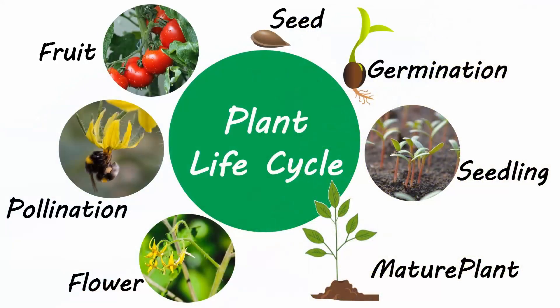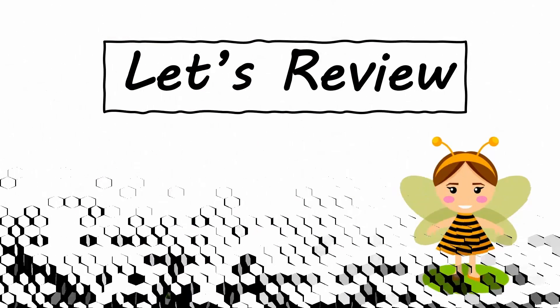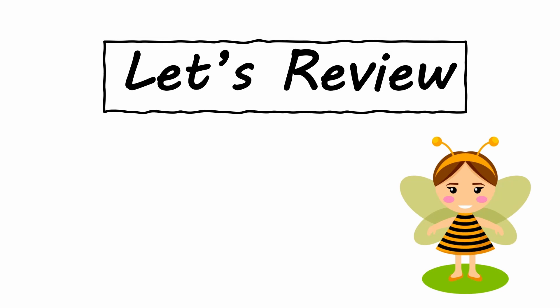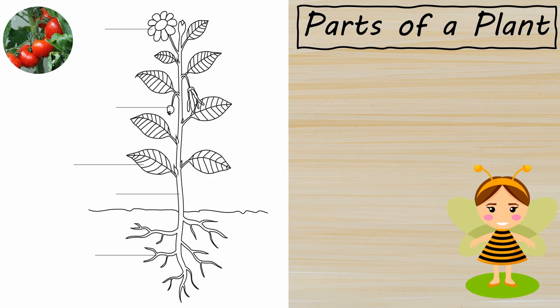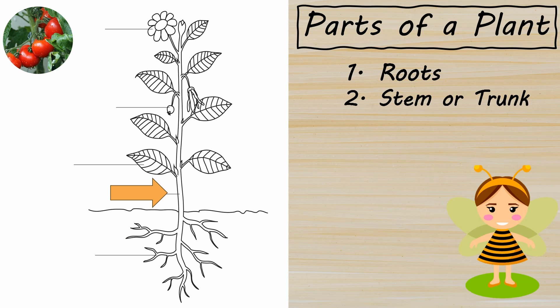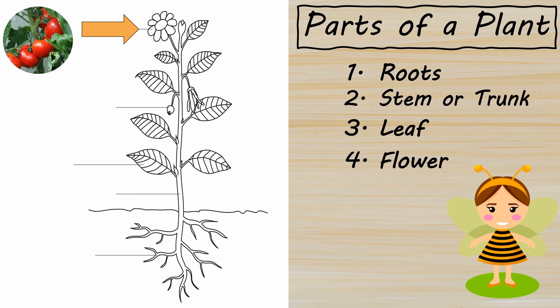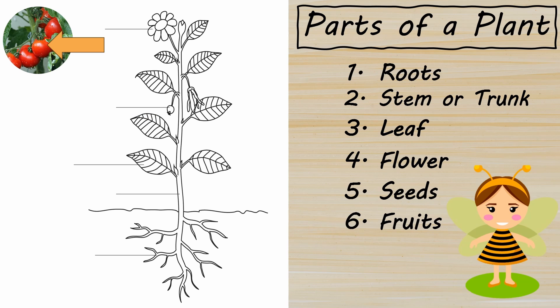The next time you see a flower or eat a piece of fruit, remember the incredible journey it took to get there. We're at the end of the lesson. Let's do a quick review before we test your knowledge. There are six main parts of a plant: roots, stem or trunk, leaf, flower, seeds, and fruit.